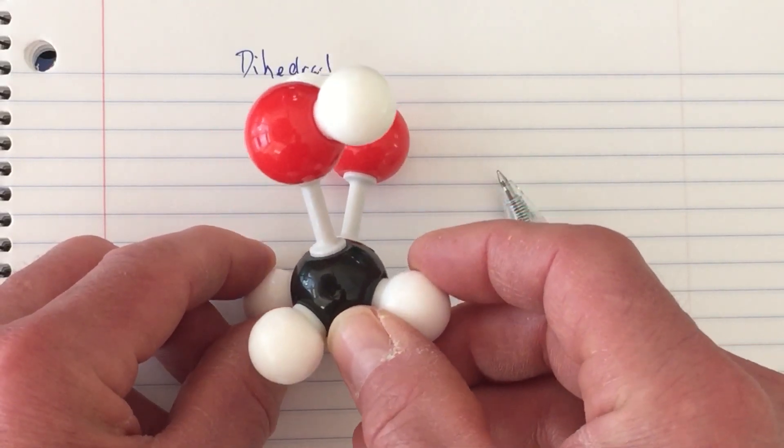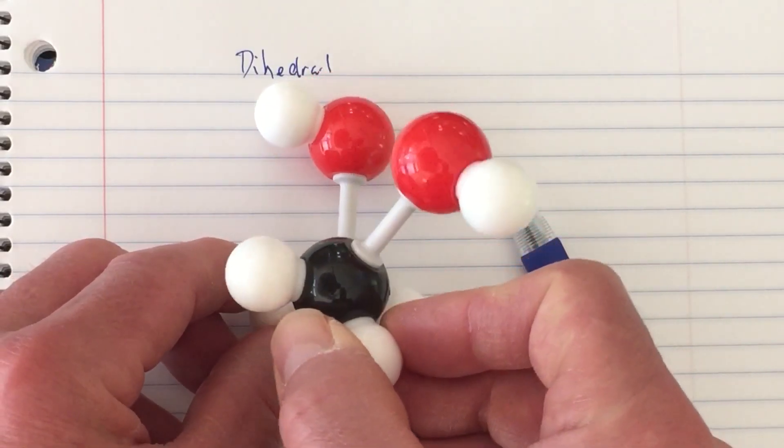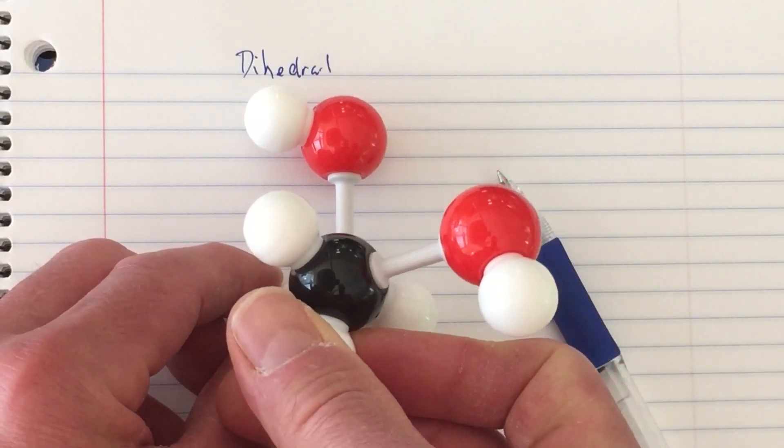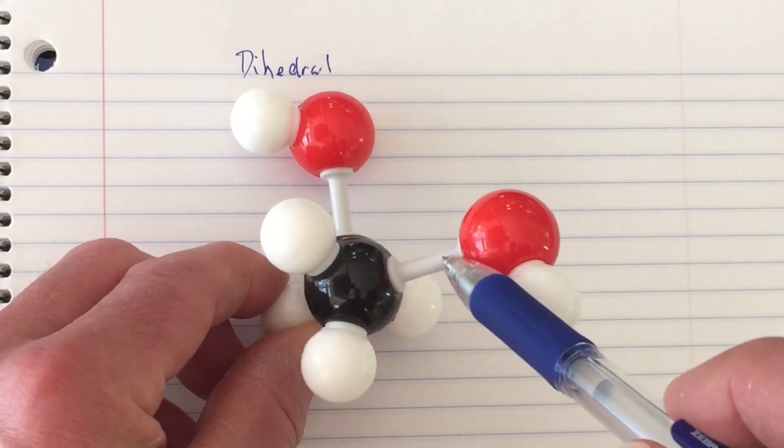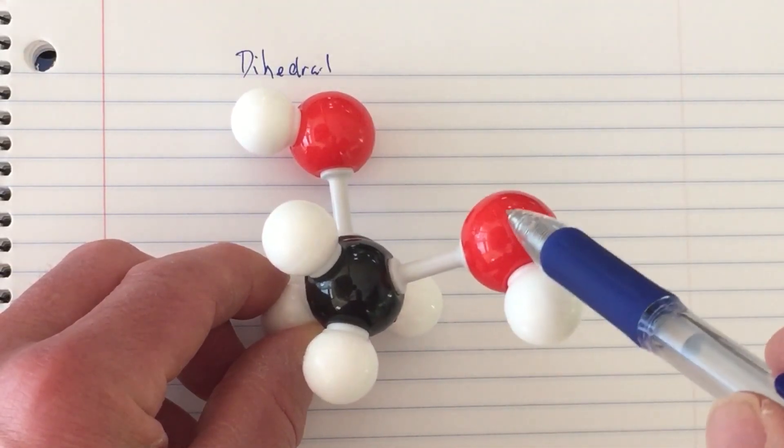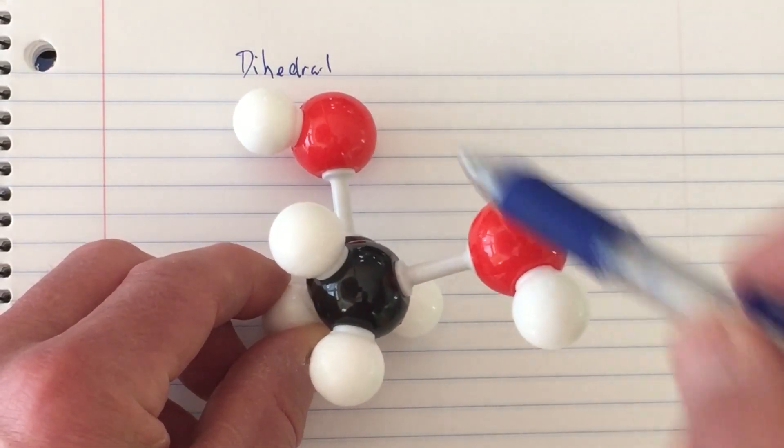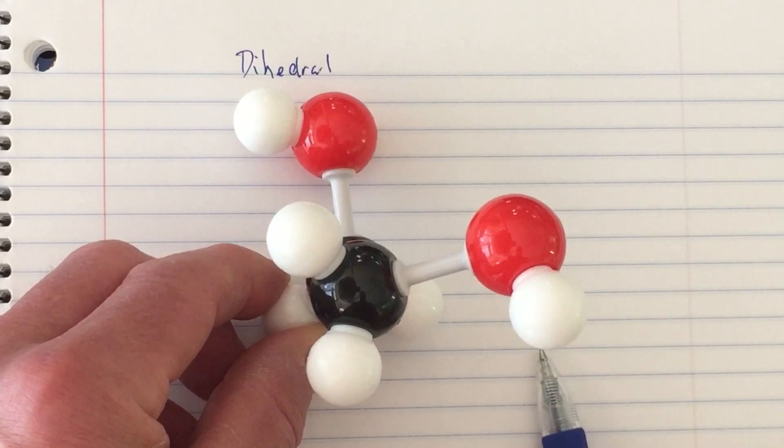what we mean by dihedral angles by changing the rotation about that carbon-carbon bond. You can see that there's an angle defined by the rotation required to bring this hydroxyl group to the position of the other hydroxyl group.